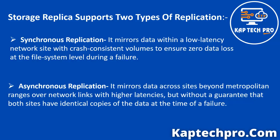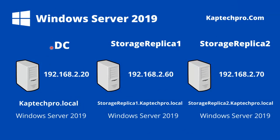Now let me show you our today's lab environment. For today's demonstration we are using three machines. One is the DC machine with static IP 192.168.2.20, domain name CapTechPro.local, running Windows Server 2019. Then we have two more machines on which we will configure storage replica: Storage Replica 1 and Storage Replica 2, both domain-joined with FQDNs storagereplicaX.capTechPro.local and Windows Server 2019 installed. Now let's jump to our Storage Replica 1 machine and start with the installation and configuration.